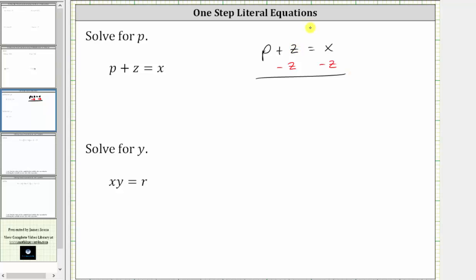Simplifying on the left, z minus z is zero, which is why we subtracted z on both sides. We now have p equals on the right, x minus z. The equation is now solved for p and we are finished.